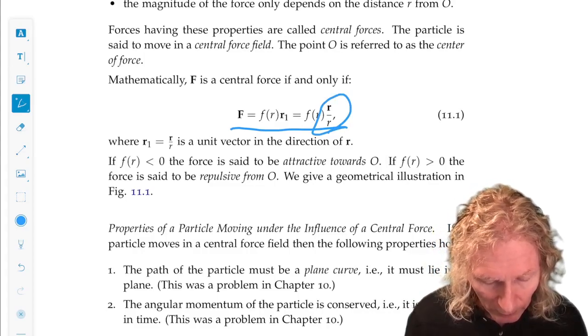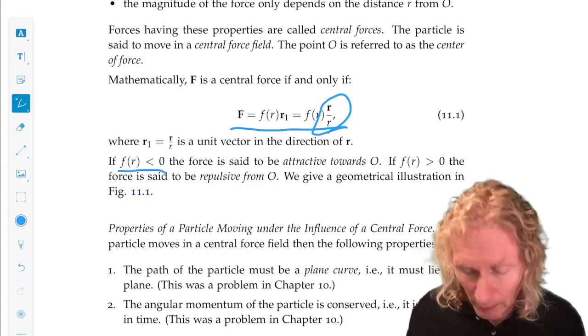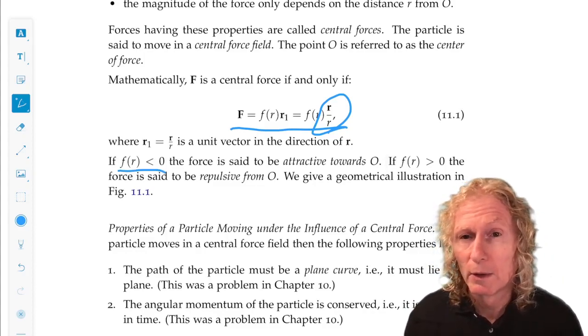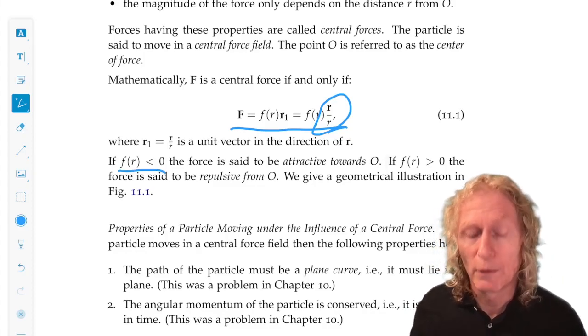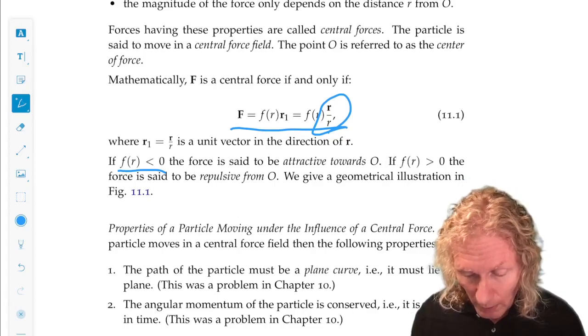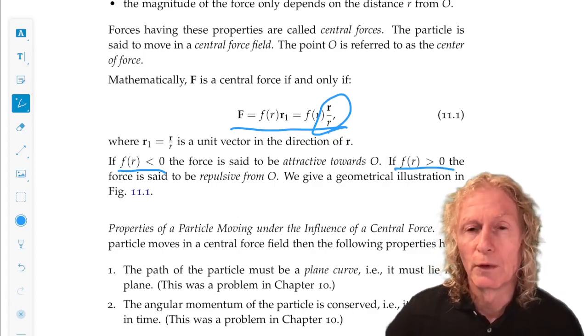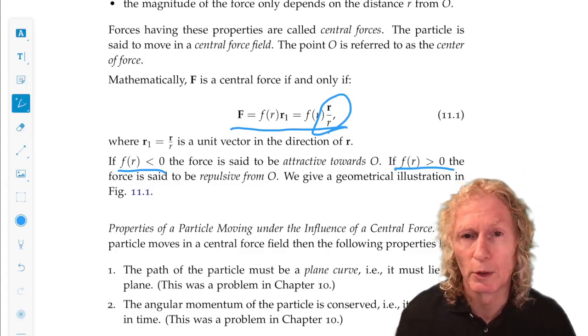Now if F of R is less than zero, strictly less than zero, the force is said to be attractive towards the origin. And if it is strictly positive, the force is said to be repulsive from the origin.